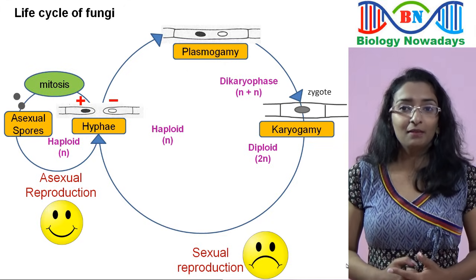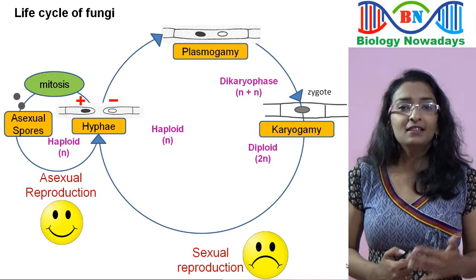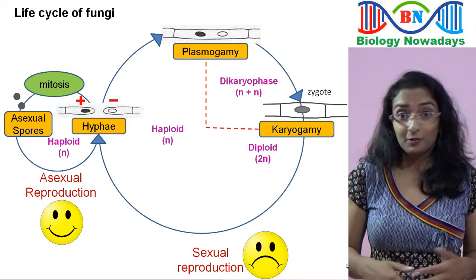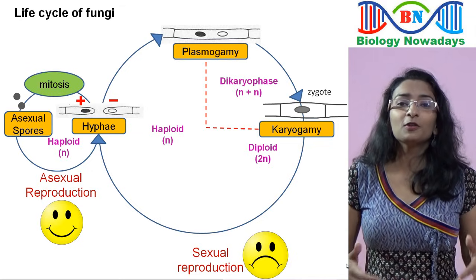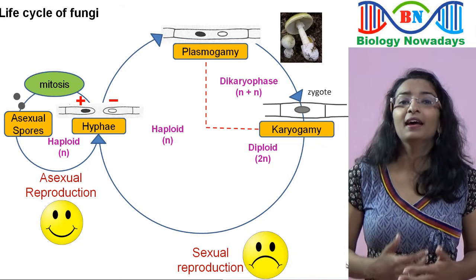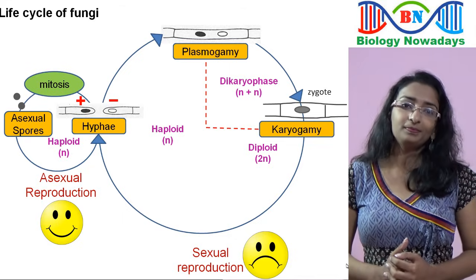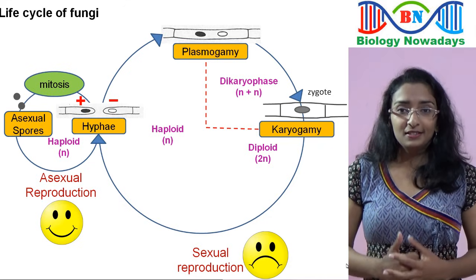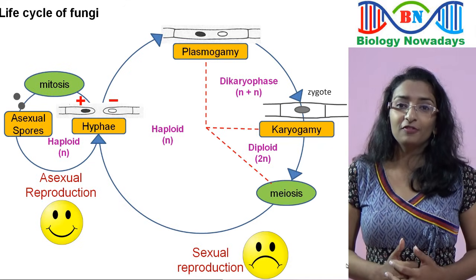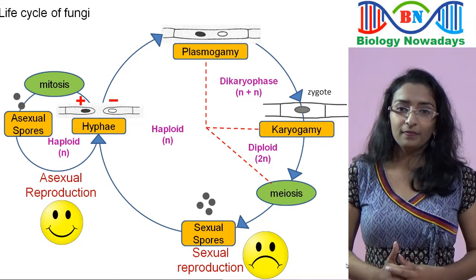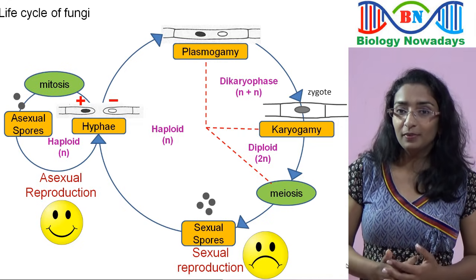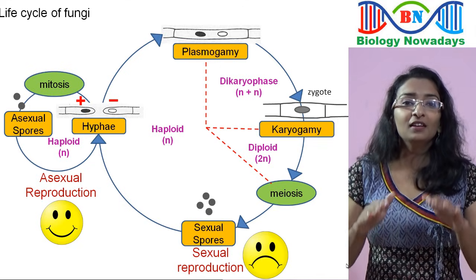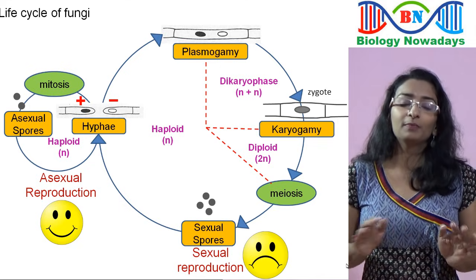In some groups of fungi like Basidiomycetes, this dikaryophase lasts for a long time, sometimes for centuries. During this time, most of them form fruiting bodies and some do not. Soon after the zygote is formed, it undergoes meiosis, leading to formation of haploid sexual spores. These spores germinate into mycelium, and importantly they will be genetically different from both parents.